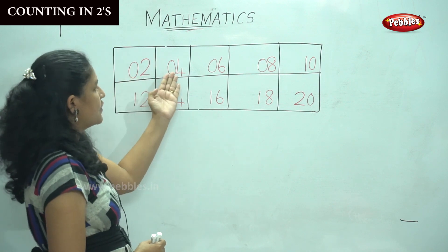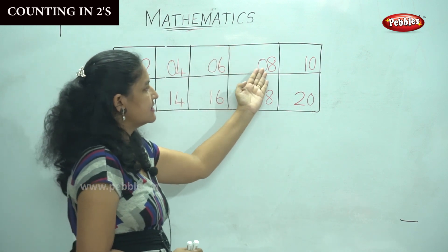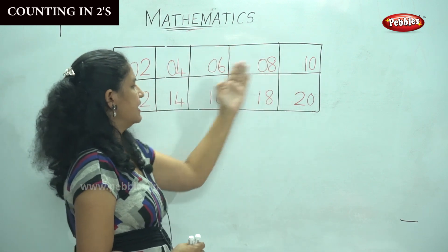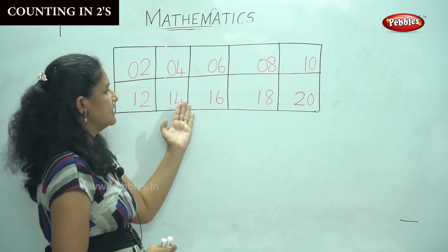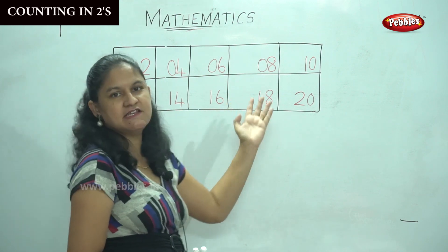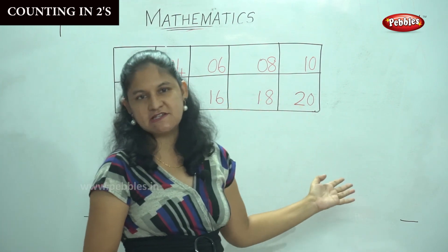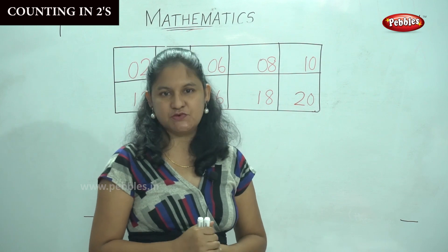So it is two, four, six, eight, ten, twelve, fourteen, sixteen, eighteen, twenty. This is your table two.